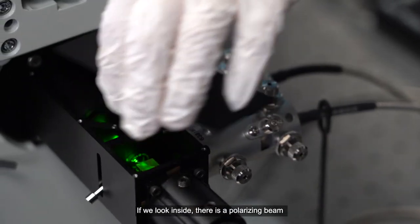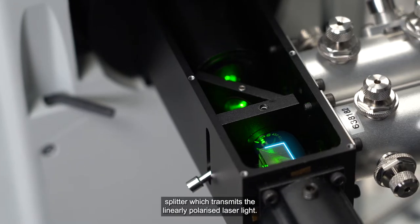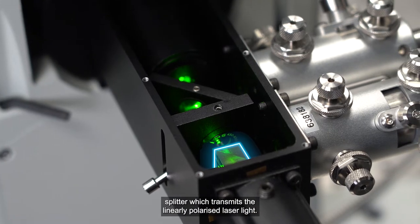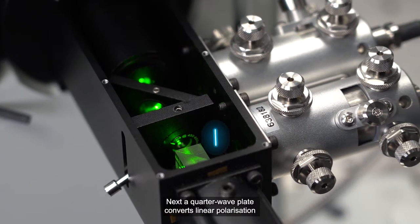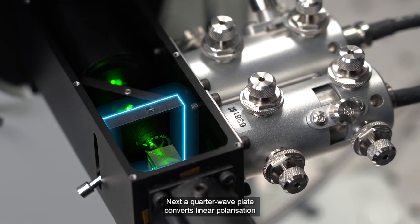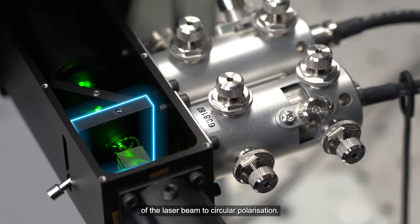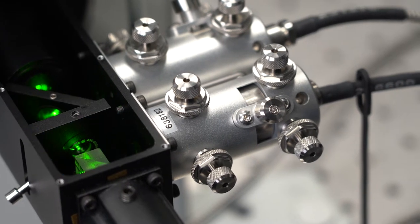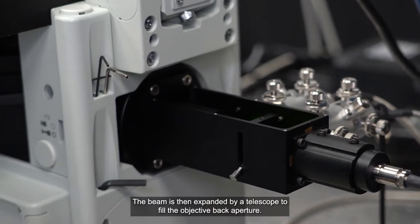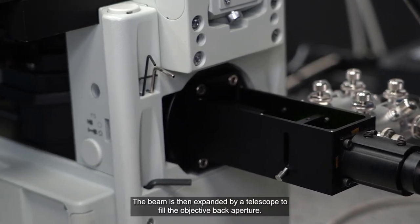If we look inside, there is a polarizing beam splitter which transmits the linearly polarized laser light. Next, a quarter-wave plate converts linear polarization of the laser beam to circular polarization. The beam is then expanded by a telescope to fill the objective back aperture.